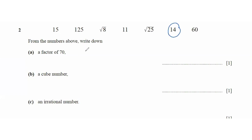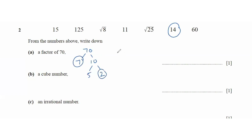If we split 70: 70 is 7 times 10, and 10 is 5 times 2. We know 7 times 2 is 14. Hence, 14 is a factor of 70.